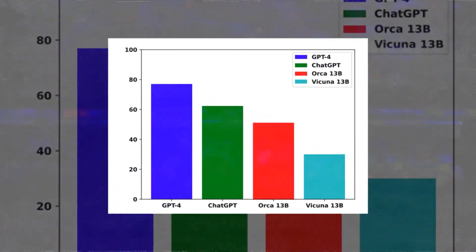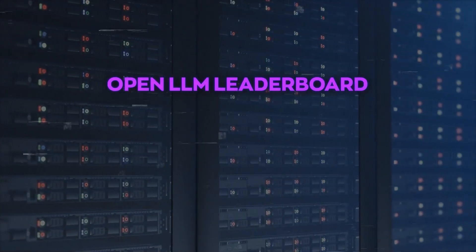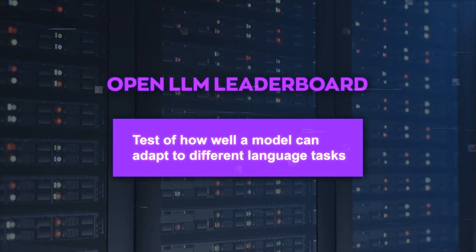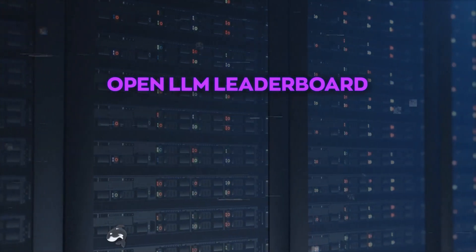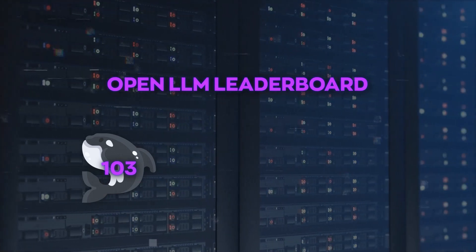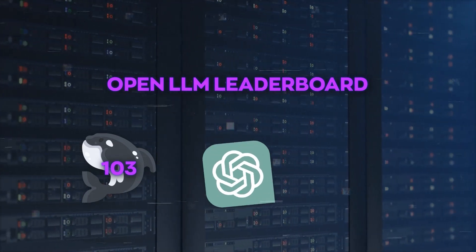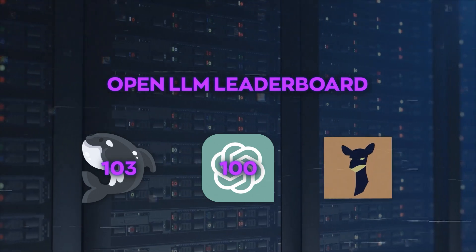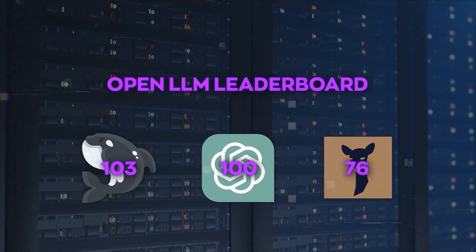The OpenLLM Leaderboard is a test of how well a model can adapt to different language tasks. Free Willy 2 got 103 points on this test, which is better than ChatGPT's 100 points and Vicuna 13B's 76 points.